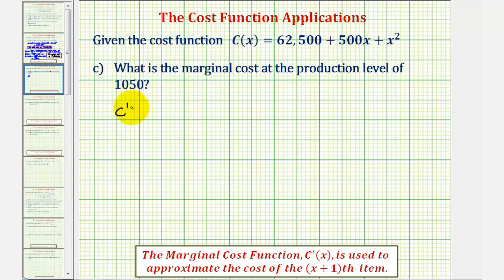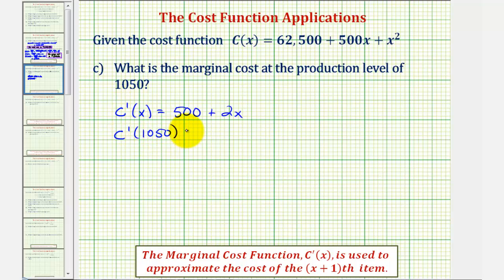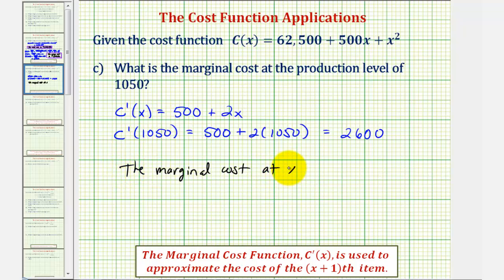The marginal cost function c prime of x equals the derivative of 62,500, which is zero, plus the derivative of 500x, which is 500, plus the derivative of x squared, which is 2x. Evaluating at x equals 1,050 gives 500 plus 2,100, which equals 2,600. So the marginal cost at x equals 1,050 is $2,600 — the cost to produce the next item when the production level is 1,050.